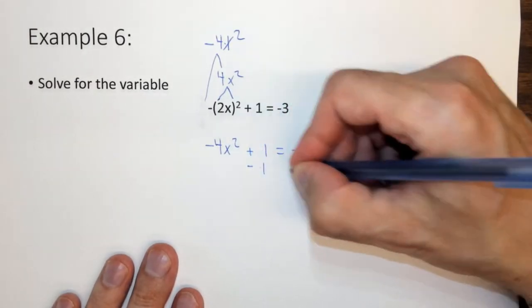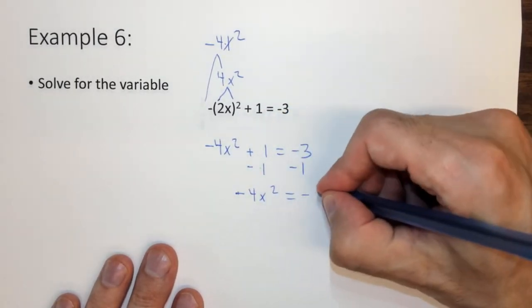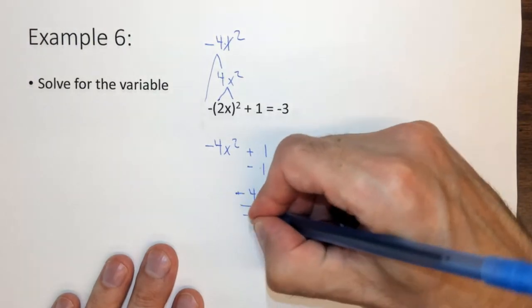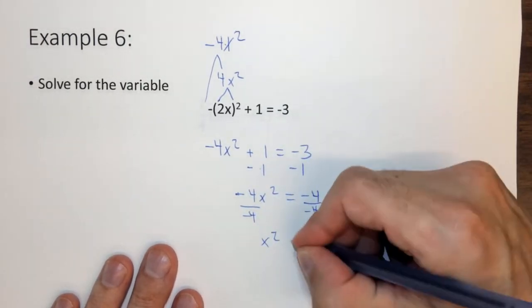Subtract 1, subtract 1. Negative 4x squared equals negative 4. Divide by negative 4, divide by negative 4. X squared equals 1.